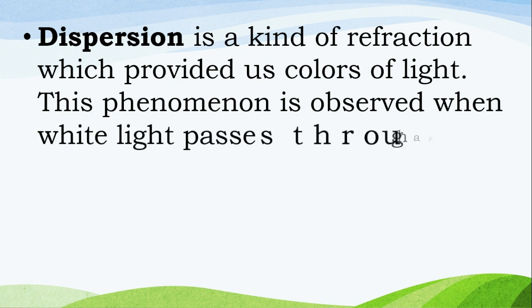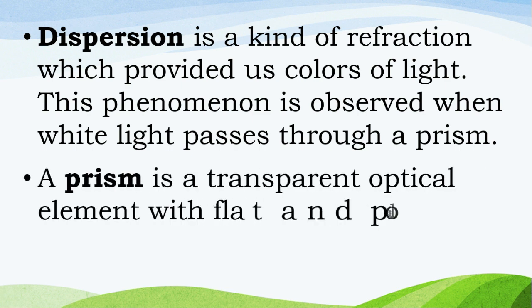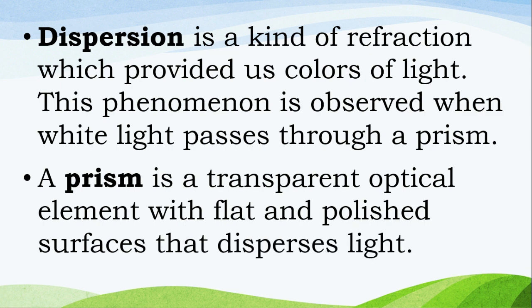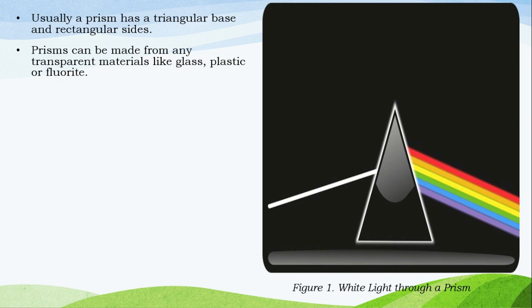Dispersion is a kind of refraction which provides us the colors of light. This phenomenon is observed when white light passes through a prism. A prism is a transparent optical element with flat and polished surfaces that disperse light. Usually, a prism has a triangular base and rectangular sides. Prisms can be made from any transparent materials like glass, plastics, or fluorite. Water in a glass can also act as a prism.